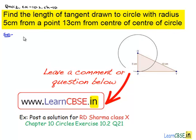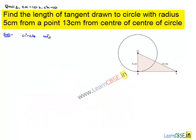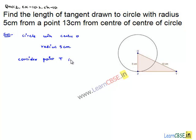Now, coming to the solution, let us consider a circle with center O that is of radius 5 cm. Consider a point T that is 13 cm from center O. Therefore, we get OT is equal to 13 cm and from T, let us draw a tangent PT.